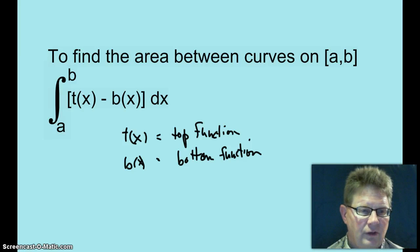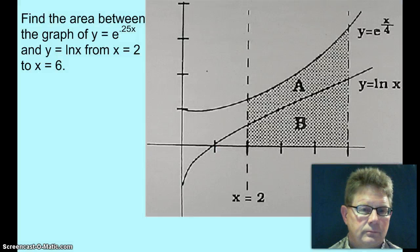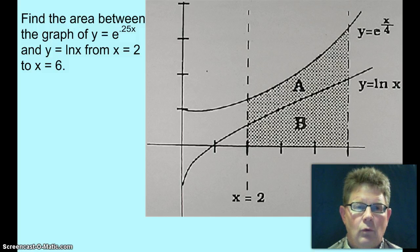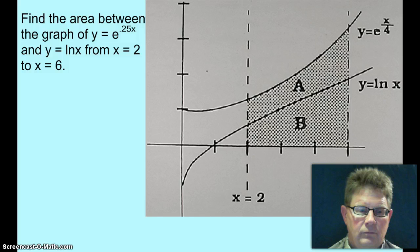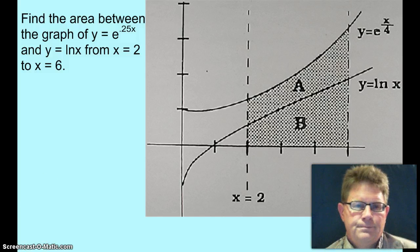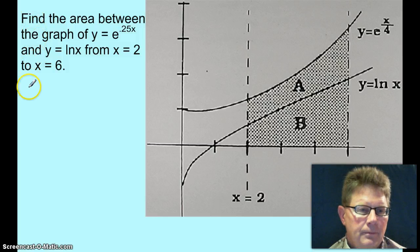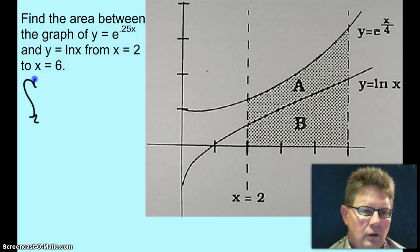Okay, so let's look at our first example. Find the area between the graph of y equals e to the 0.25x and y equals ln of x, from x equals 2 to x equals 6. Let's set this integral up. It would be the integral from 2 to 6. Which function is the top function? Yes, that's right. e to the 0.25x minus the bottom function ln of x dx.